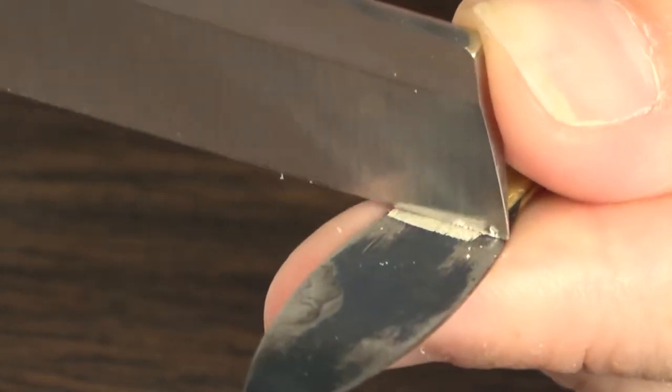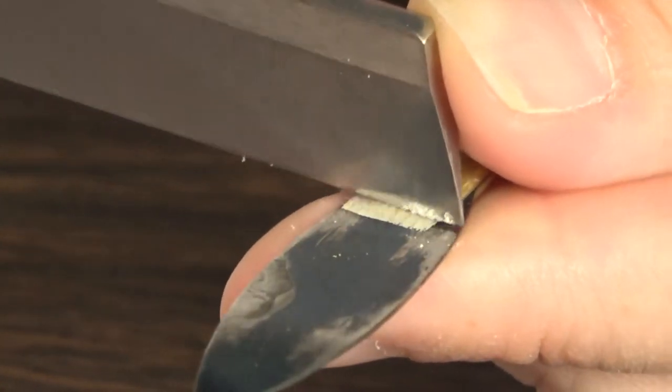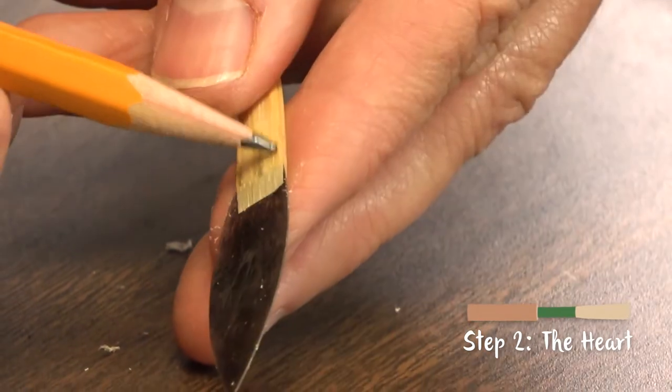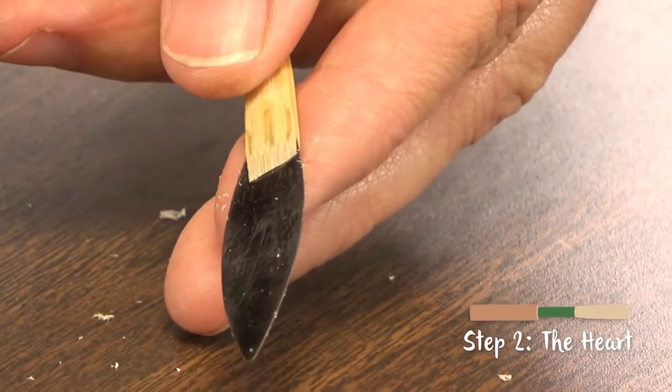Beginning reed makers often wonder how thin to scrape the end of the tip. You are trying to get the tip as thin as it is on a finished reed. Once you have thinned and refined the tip on both blades, you can move on to the heart.